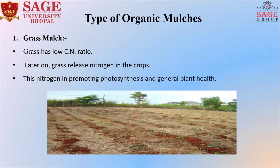Types of organic mulches: The first is grass mulch. Grass has a low carbon-to-nitrogen ratio. The carbon-to-nitrogen ratio is a quick way to evaluate the balance between two elements present in the soil that are both essential for crop growth and microbial health. Grass mulch later releases nitrogen into the soil crops. The nitrogen promotes photosynthesis and the natural plant's health.